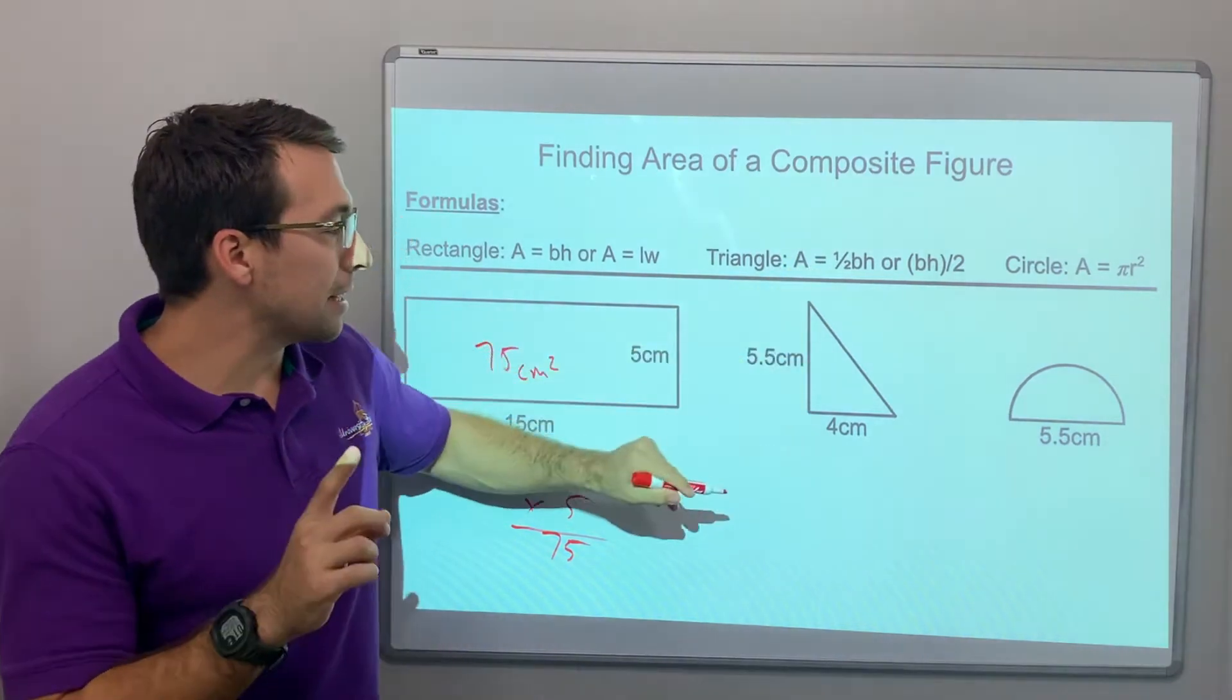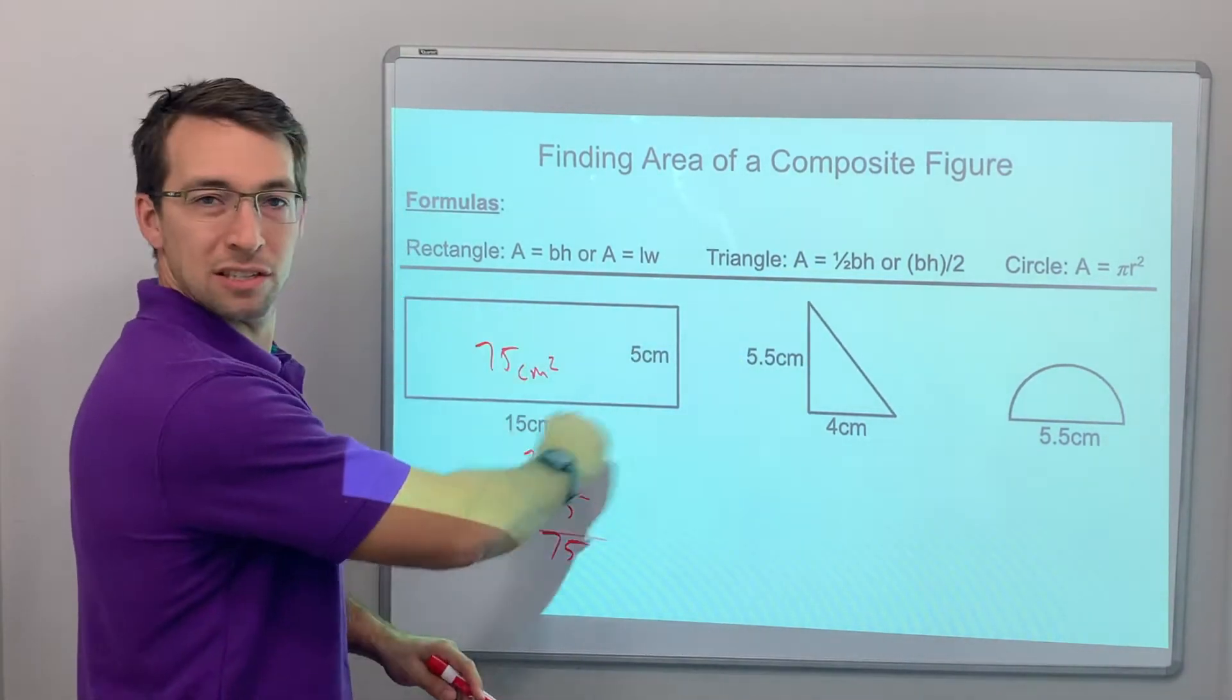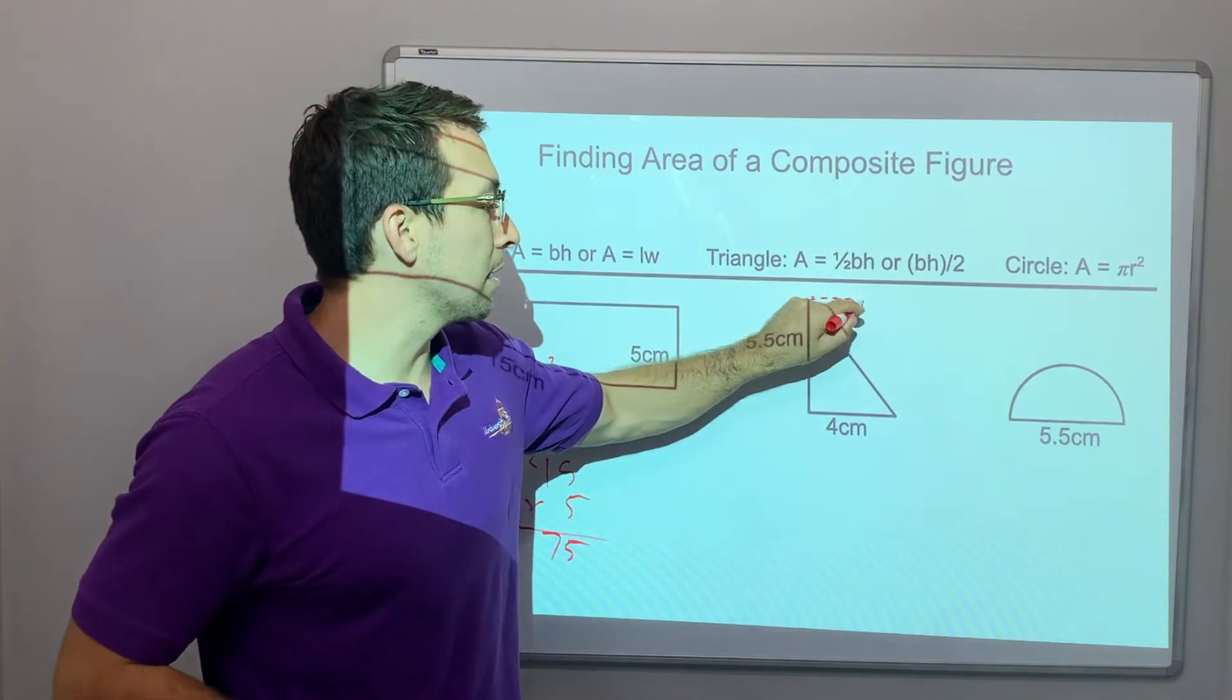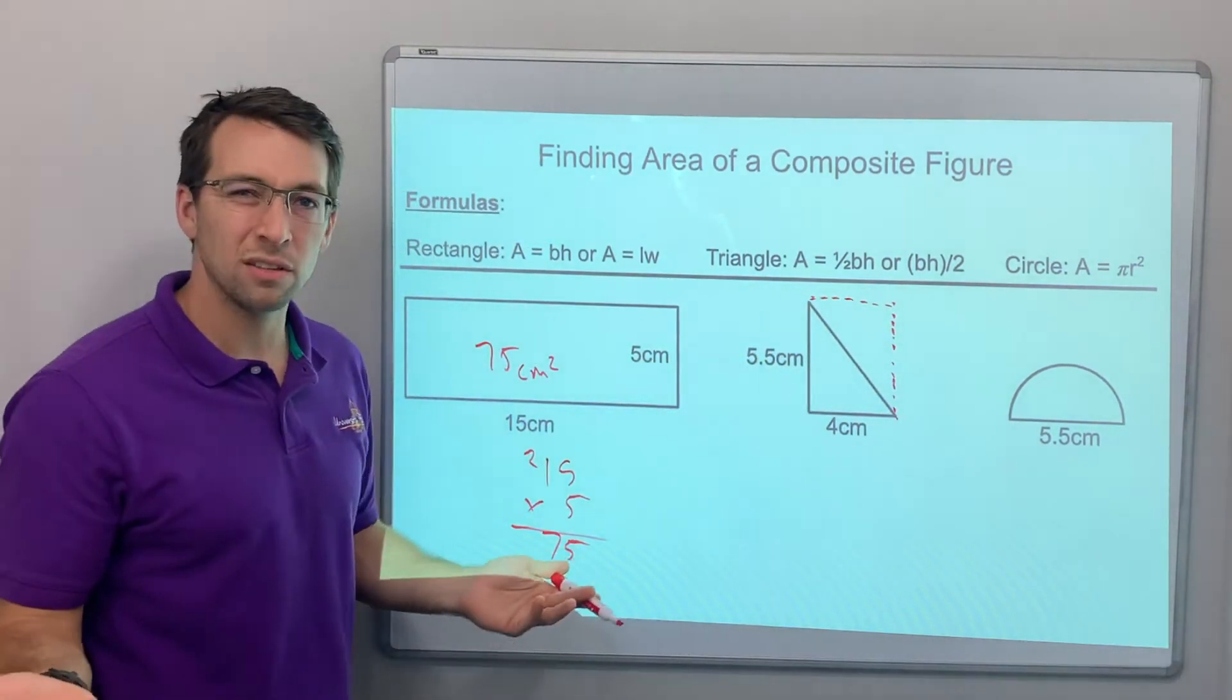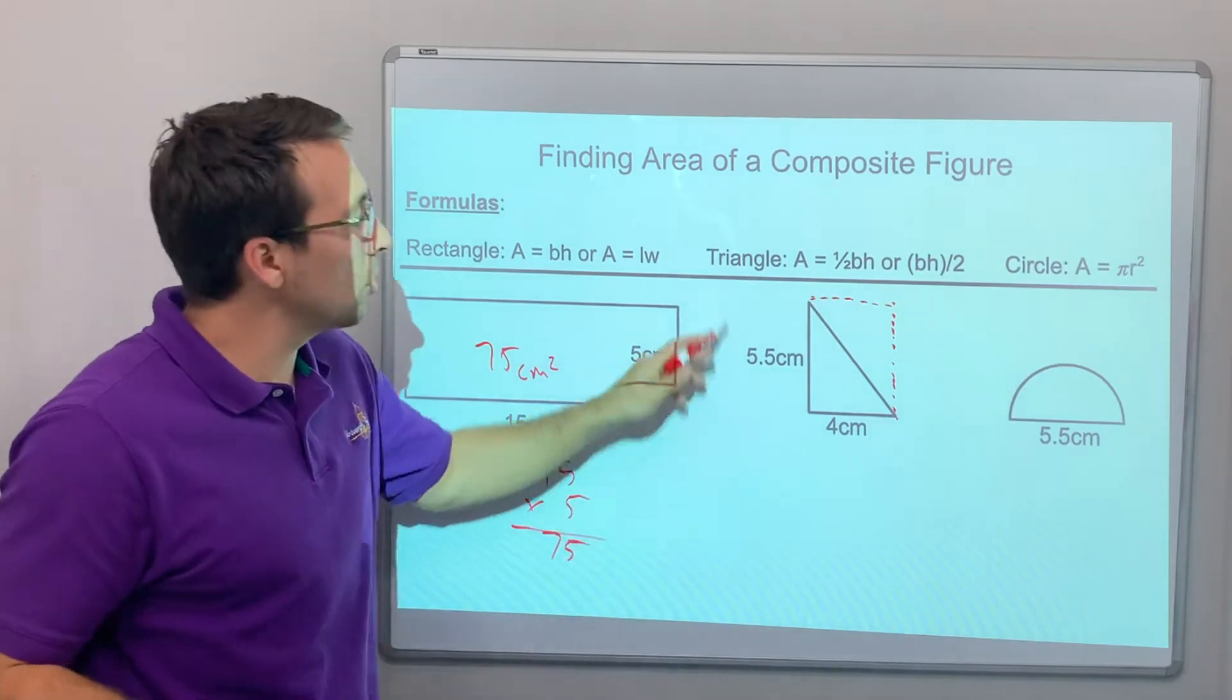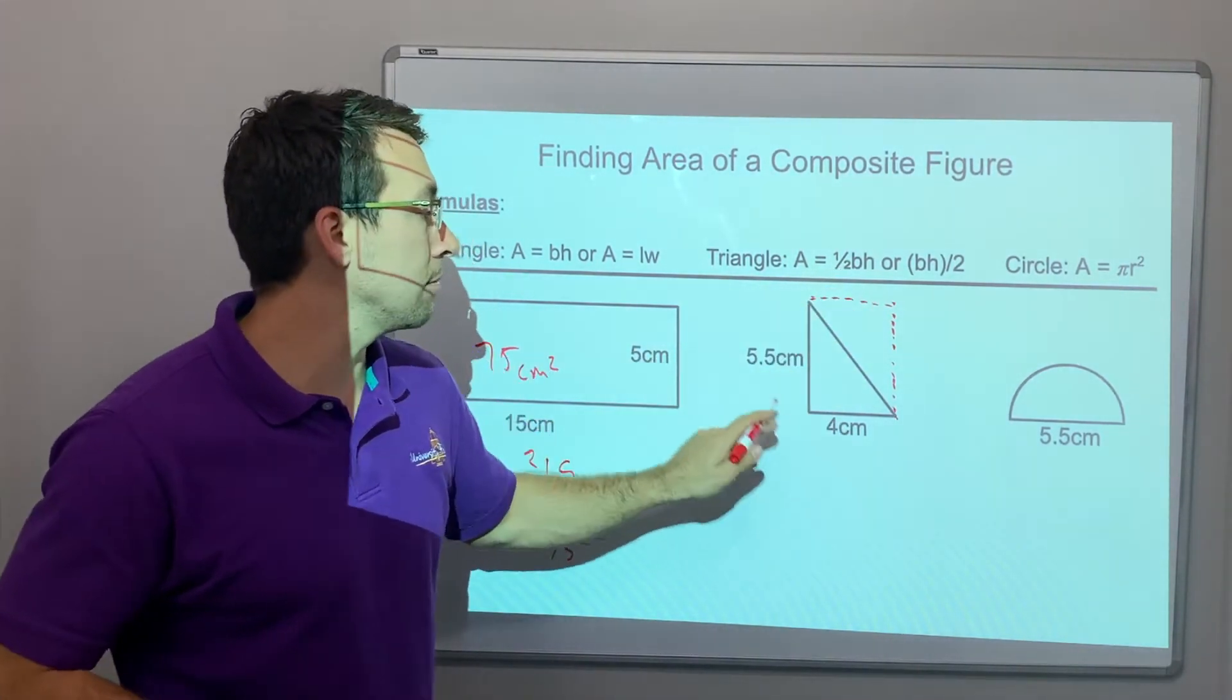And now a triangle. Think about this. Base times height gave us a quadrilateral. So if we do base times height, wouldn't we end up with a rectangle? Yeah, but we don't want that. We only want the triangle. So that's half. Half of base times height.